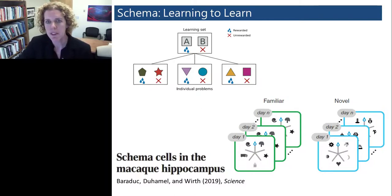The development of a schema that supports this kind of rapid learning is thought to involve interactions between the hippocampus and the neocortex. However, the neural circuitry that underlies this kind of rapid one trial learning is not well understood.